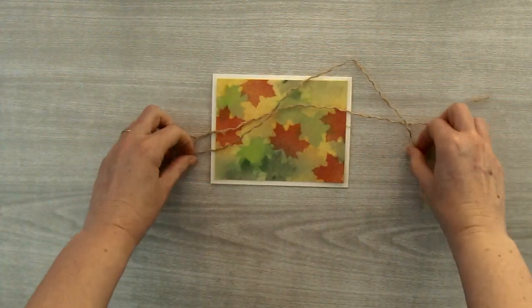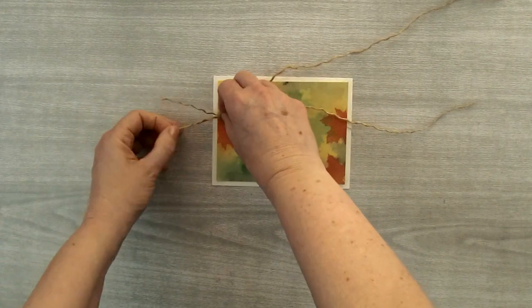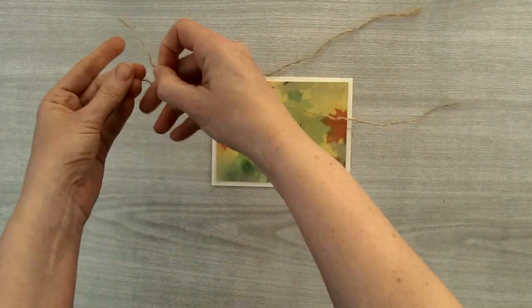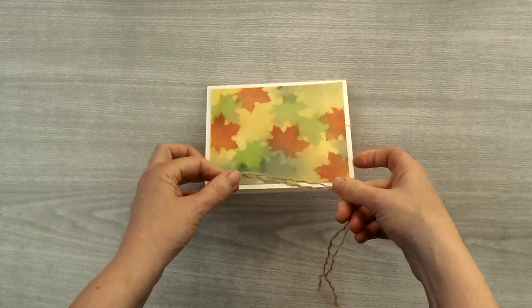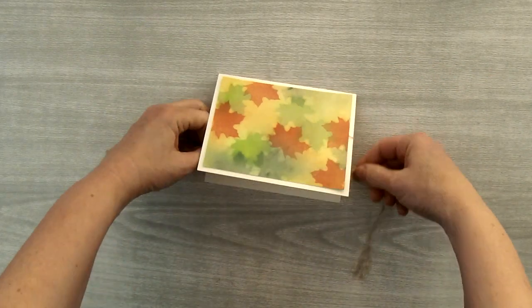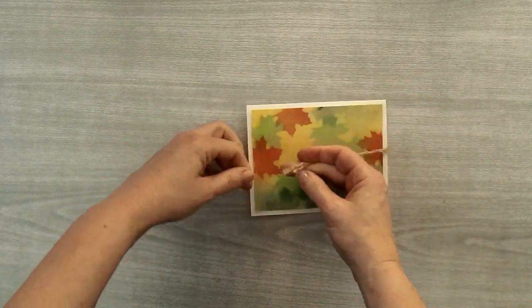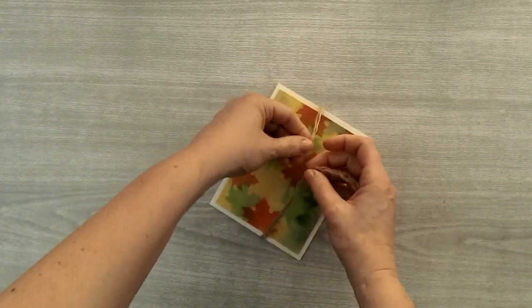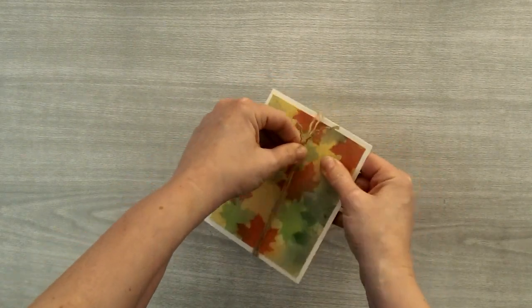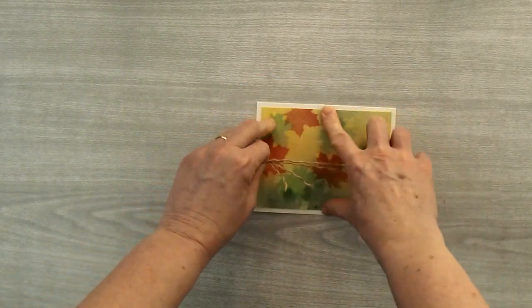So then you're going to take 2 of these strands and you're going to line them up. And you're going to tie them around your card. I want the knot to be over on the right hand side.